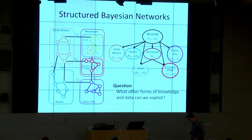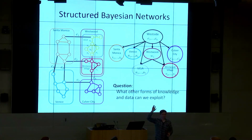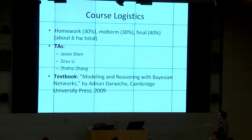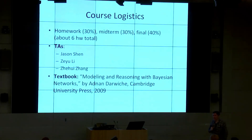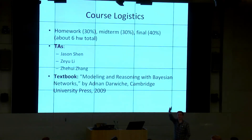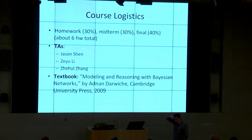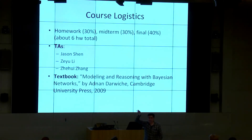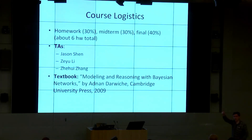We'll have homework, a midterm, and a final — about six homeworks total. We have three TAs: Jason Chen, Zeo, and Zewe. The textbook is 'Modeling and Reasoning with Bayesian Networks,' 2009, available in the bookstore, on Amazon, and I understand it's also available free online for UCLA students. Ask the TAs — Jason knows about this. That's basically it for this segment. We'll take a 10-minute break and then start our second hour.